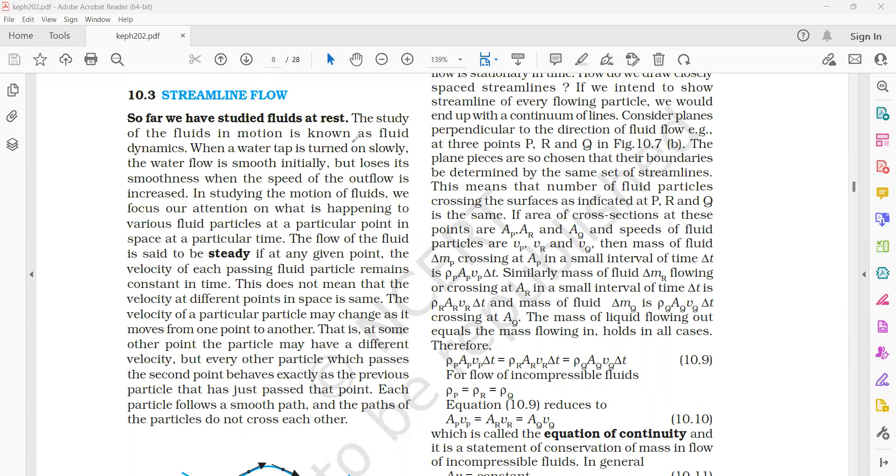When we turn on a water tap very slowly, initially the water flow is very smooth. When we increase the speed by changing the tap position, then when the speed of the water increases, it loses its smoothness.